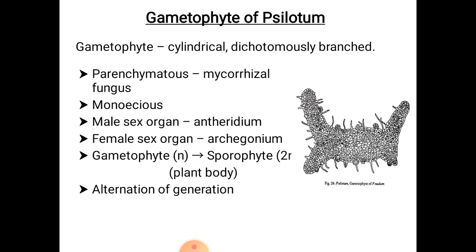The male and female sex organs are found in the same prothallus; hence, it is monoecious. The male sex organ is called antheridium, and the female sex organ is called archegonium. They are concerned with sexual reproduction. As a result of fertilization, a diploid zygote is formed, which gives rise to an embryo, which in turn gives rise to a diploid sporophytic plant body.